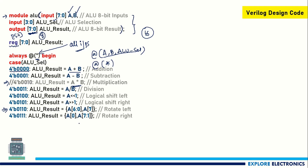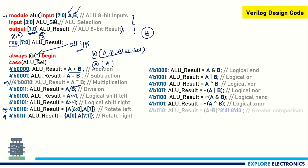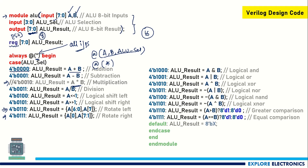Similarly, for rotate right I use the same concatenation method, where the LSB wraps around to the MSB. After the shifting and rotation cases, there are logical operations. Finally, the default case assigns 8'bx to the result, followed by endcase, end, and endmodule.